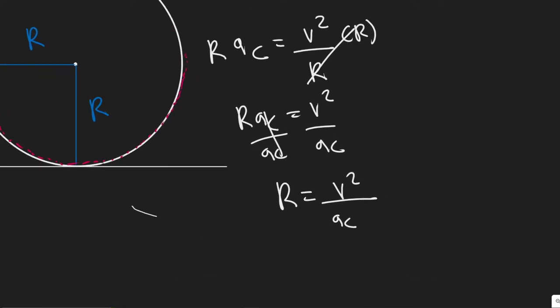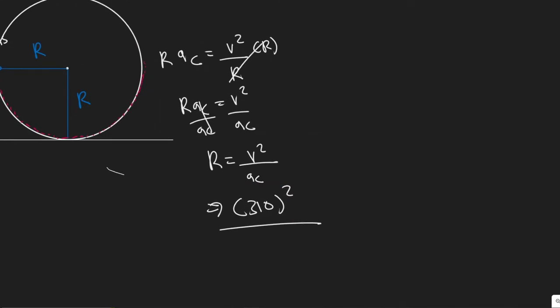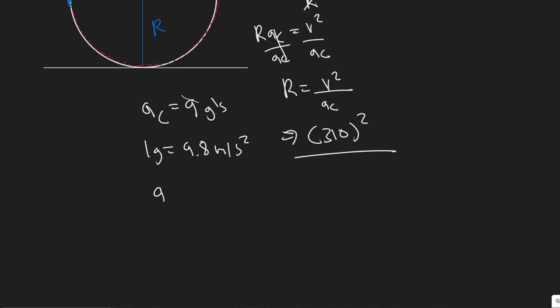So basically, we just got to solve for r by plugging these in. So as I said before, velocity is 310. So we just square it. But a sub c, they tell us the max we can experience for the pilot is 9 g's. Now, what is 1 g? 1 g is equal to 9.8 meters per second squared. So 9 g's. You have 9 g's. You would just say 1 g, these would cancel. So you basically just multiply it by 9.8 to get in the correct unit, because we need it in meters per second squared. So it's 88.2.